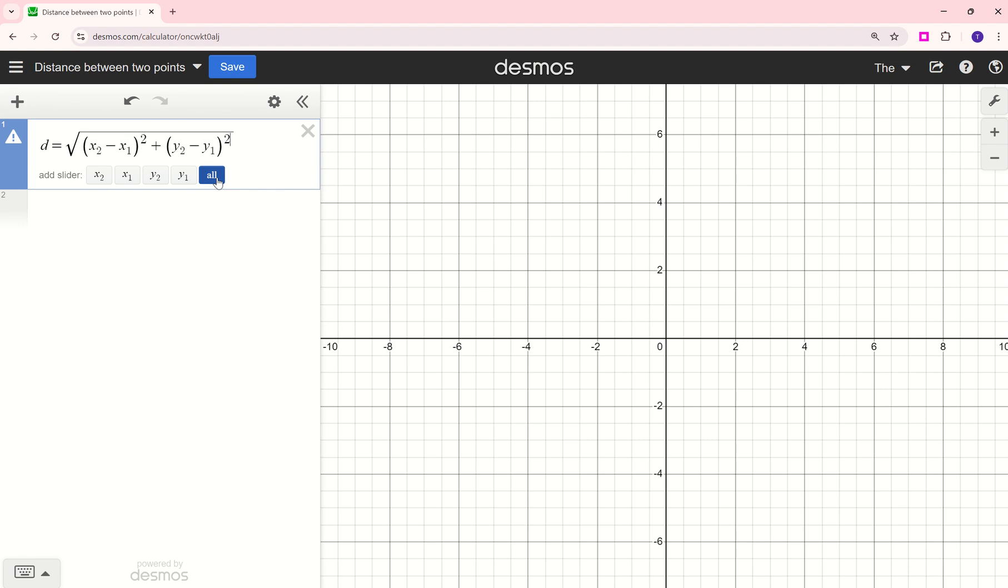I'm going to add a slider for all of these variables. Notice that the order that they appear in right here is the order that you will see when they drop down. So the second X value, the first X value, the second Y value, and the first Y value.